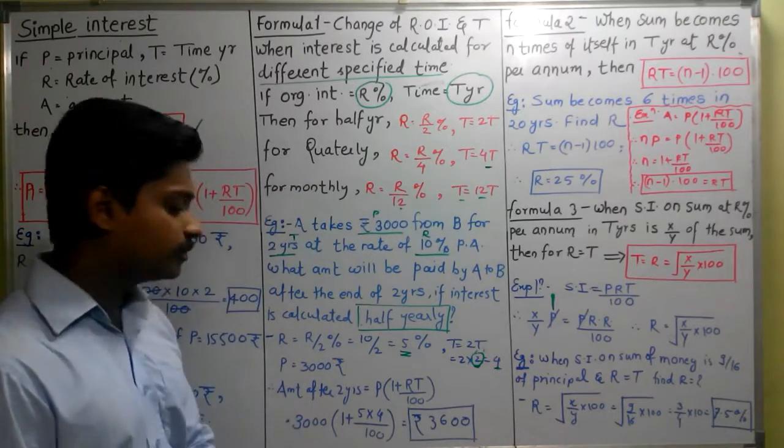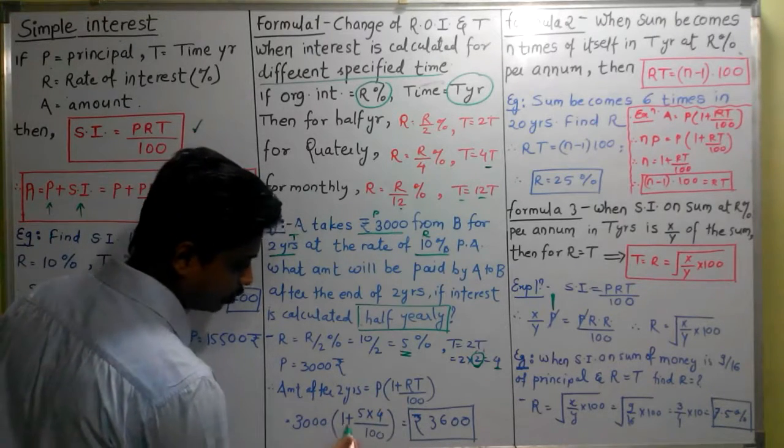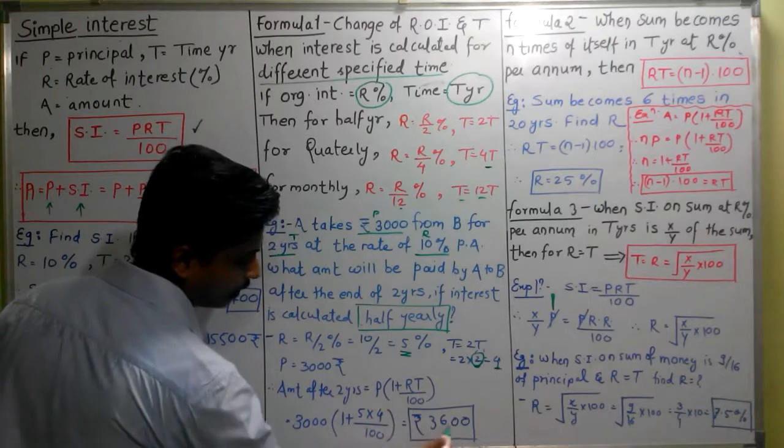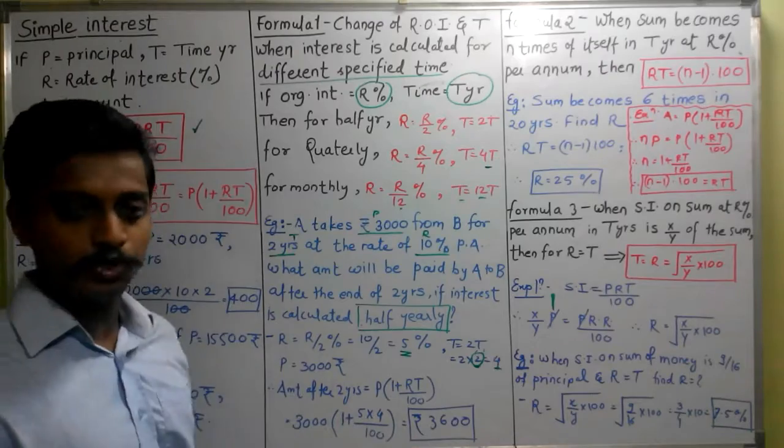Amount after 2 years, which is equal to P times (1 plus RT upon 100). So P value is 3000, 1 plus R value is 5, T value is 4 divided by 100. Answer is 3600. So rupees 3600 will be our answer.